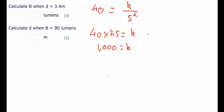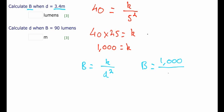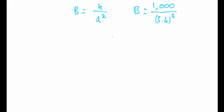Now let's take a look at the first problem. It says: calculate b, the brightness, when d is 3.4 meters. From our original equation, we have b equals k divided by d squared. In this case, we are given d and we know k, because k remains constant at 1,000. So b is equal to 1,000 divided by 3.4 squared. If we put these numbers into our calculator, we get an answer that the brightness is 86.5 to 1 decimal place, and that is in lumens.